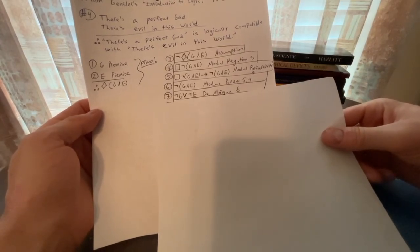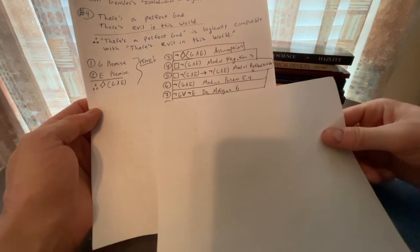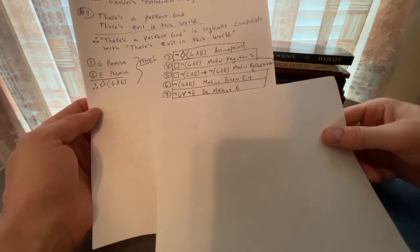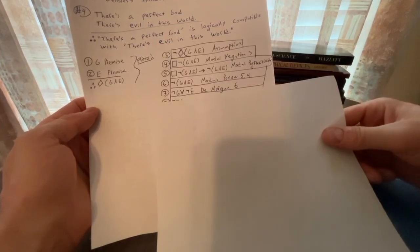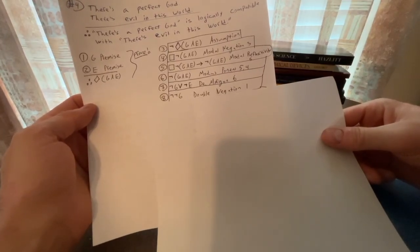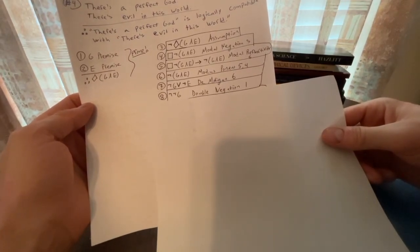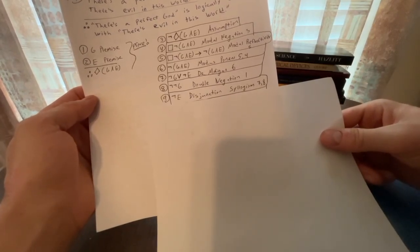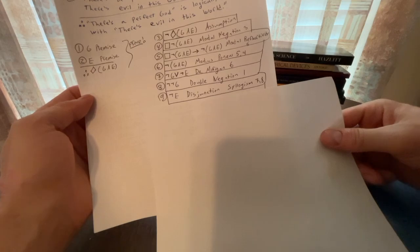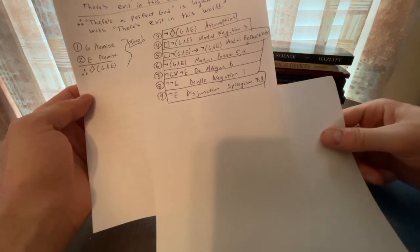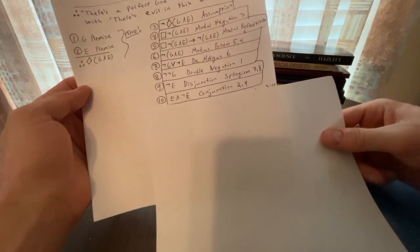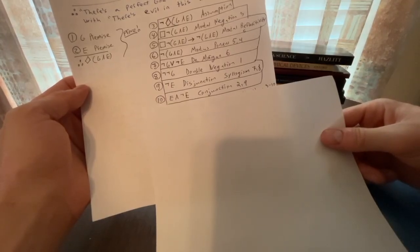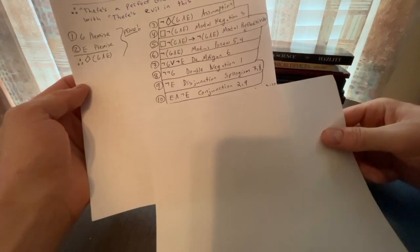With the negation of conjunction, we can then use De Morgan's law to get not G or not E. De Morgan's law, line six. We're getting close to finding that contradiction. For line eight, we can get not not G by the double negation of line one. A disjunctive syllogism is staring us in the face with lines seven and eight. Not G or not E, not not G, therefore not E. And so for line 10, we can get E and not E by conjunction of lines two and nine, but that's a contradiction.